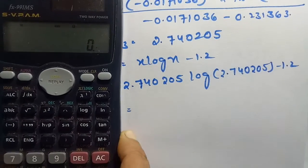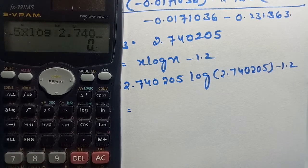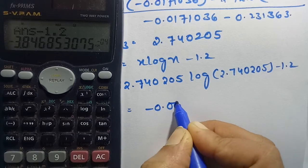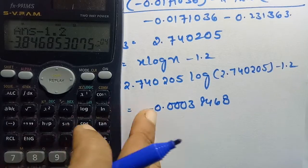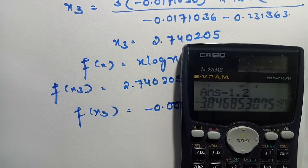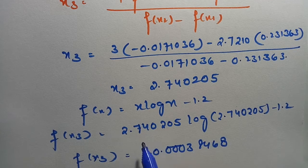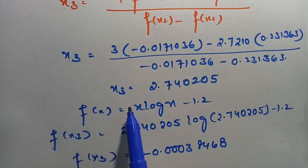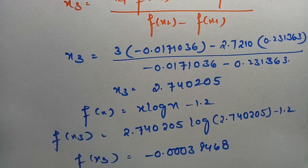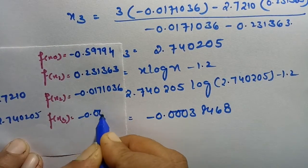Now we calculate f(x₃). With f(x) = x·log(x) − 1.2 and x₃ = 2.740205: f(x₃) = 2.740205·log(2.740205) − 1.2. The value is −0.00038468. So f(x₃) = −0.00038468.